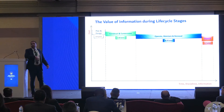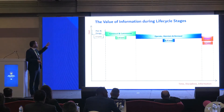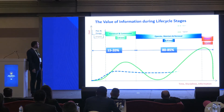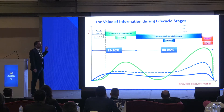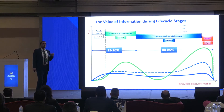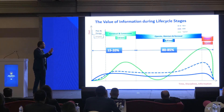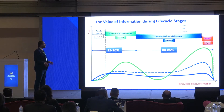Quickly I will go through the life cycle stages starting from design, construction, operation and maintenance, to see together these graphs showing the curves. Basically in the design and construction stage we are spending 15 to 20% of the life cycle duration of any project, and the remaining 80 to 85% is related to operation and maintenance.